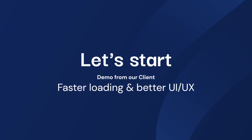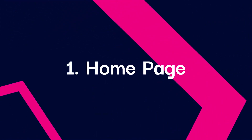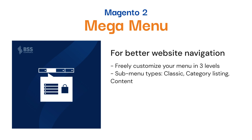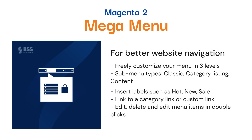Here we'll be using a demo store from our customer. The first one is Magento 2 Mega Menu. This extension lets you design the menu freely for better website navigation. Freely customize your menu in three levels with submenu types: Classic, Category Listing, and Content. Insert labels such as Hot, New, and Sale.